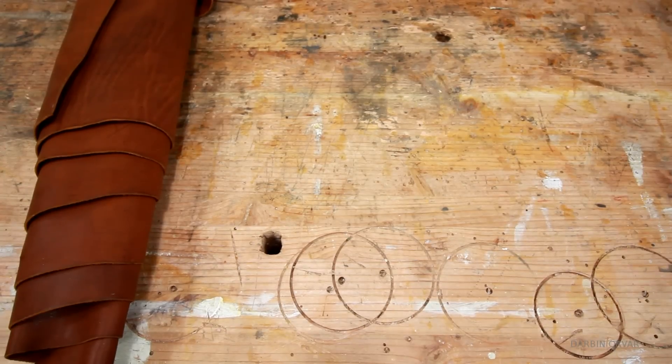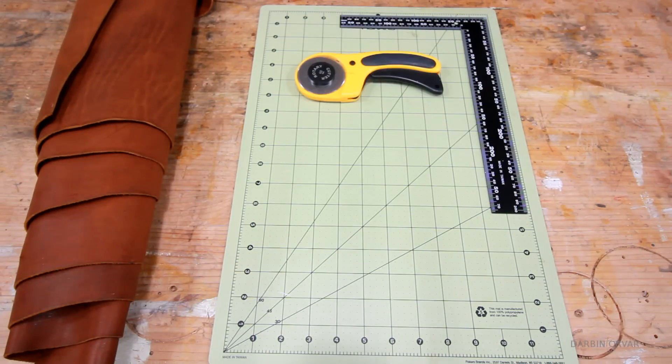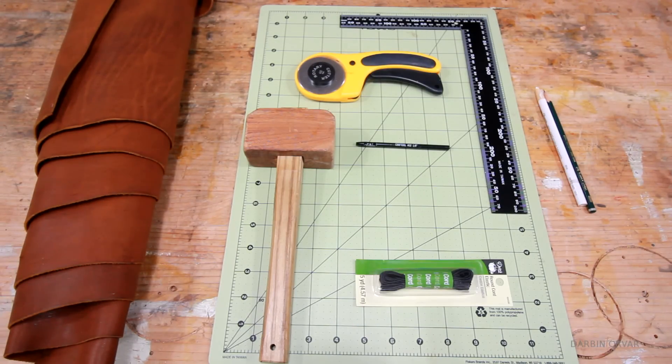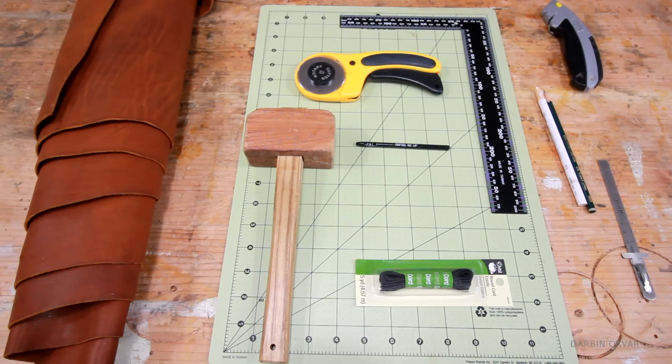To create this you'll need leather, a cutting mat, a square ruler, some way to cut the leather, a small hole puncher, mallet, elastic band, marking pencils, small ruler and a razor blade.